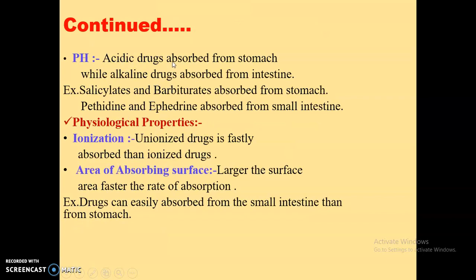pH: acidic drugs are absorbed from an acidic environment, that is, from the stomach, whereas alkaline drugs are absorbed from an alkaline environment, that is, from the intestine. Examples of acidic drugs are salicylate and barbiturate — hence they are absorbed from the stomach. Whereas pethidine and ephedrine are alkaline drugs and only get absorbed when they reach the intestine.